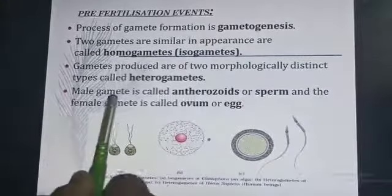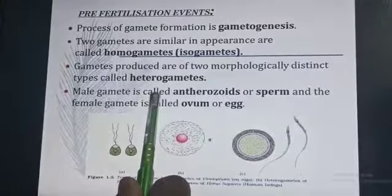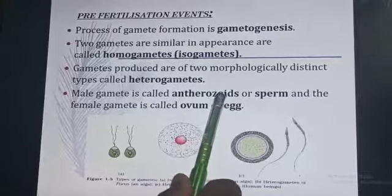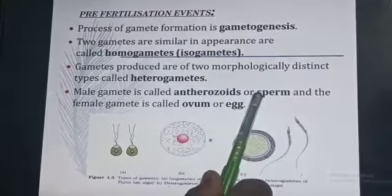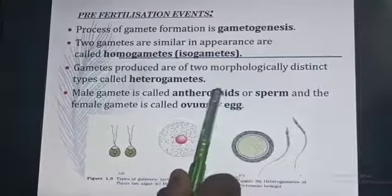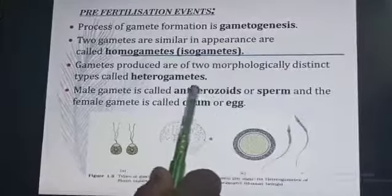Male gametes are called antherozoids or sperm. In the case of plants, they are called antherozoids.